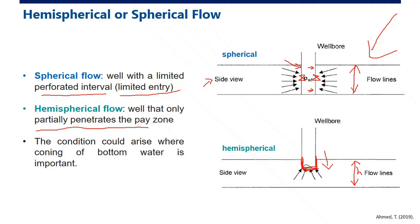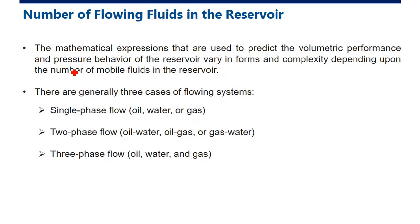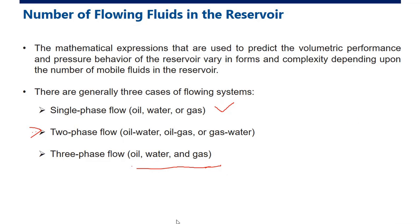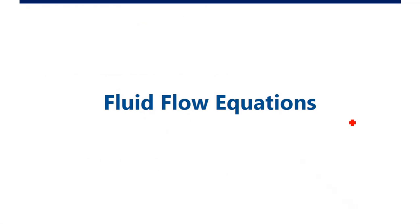The last factor is the number of flowing fluids in the reservoir. The mathematical expressions used to predict volumetric performance and pressure behavior vary in form and complexity depending on the number of mobile fluids — it can be single-phase flow (oil, water, or gas only), two-phase flow (oil-water, oil-gas, or gas-water), three-phase flow, or even more complex with solid flow.